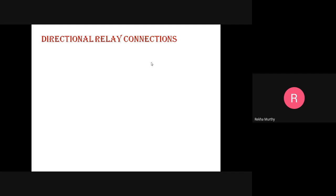There are two methods of connection: 30-degree connection and 90-degree connection. In the 30-degree connection, the current coil of the phase A relay is energized by phase current Ia and line voltage V(A to C); the phase B relay is energized by current Ib and voltage V(B to A); and the phase C relay by current Ic and voltage V(C to B). The relay is designed to develop maximum torque when its current and voltage are in phase, a condition satisfied when the system power factor is around 0.866 lagging.